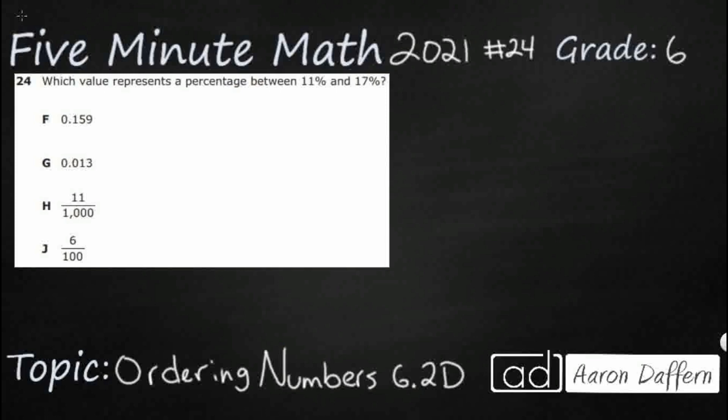So we simply need to find one of these values — F, G, H, or J — that represents a percentage between 11% and 17%. Unfortunately, we've got two of these values that are in decimals and two that are in fractions, so none of them are given to us as a percentage, but it's not that difficult to change them over.